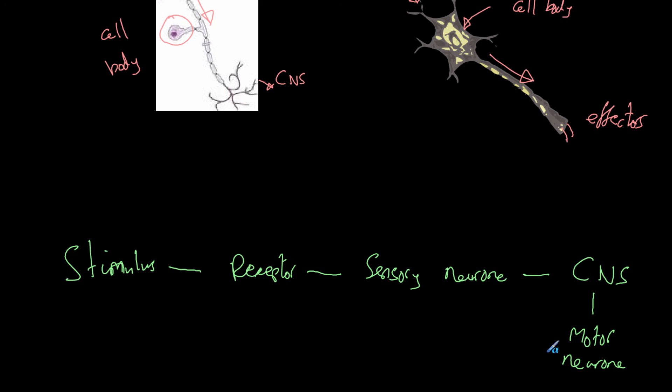The motor neuron takes that signal to the effector. And the effector will be your muscles or your glands. And then the effector will cause a response.